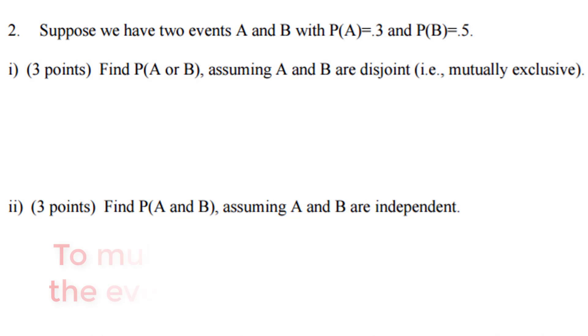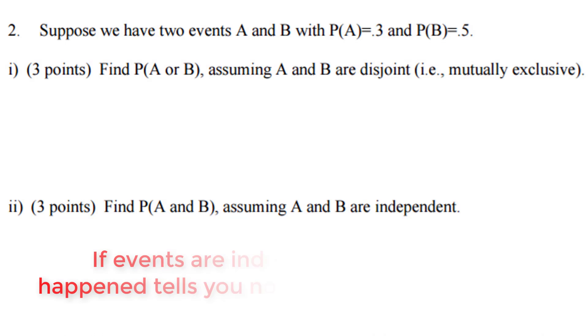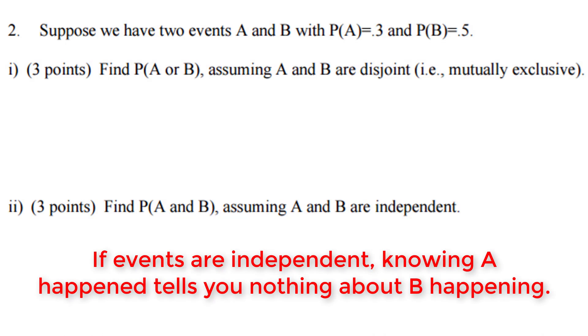These are good example problems because for us to multiply together, we need independent events. So we would say that the probability of B would not be influenced by the probability of A. Also, the probability of A would not be influenced by the probability of B. That's what it means for two events to be independent of each other.